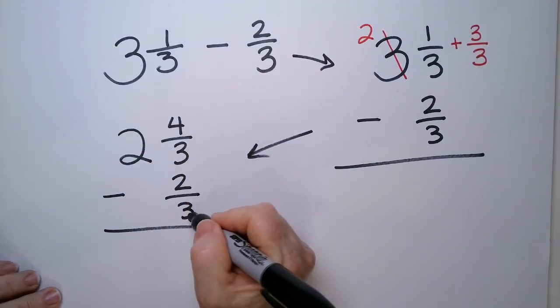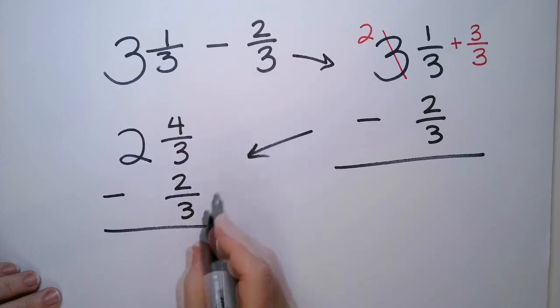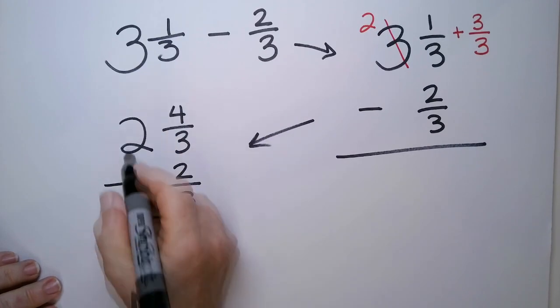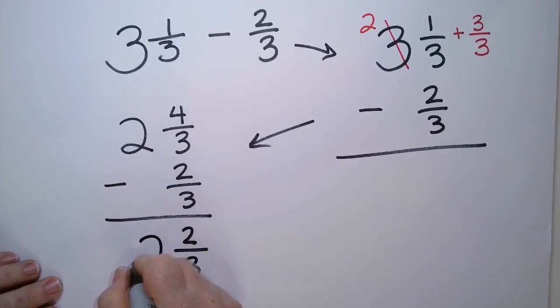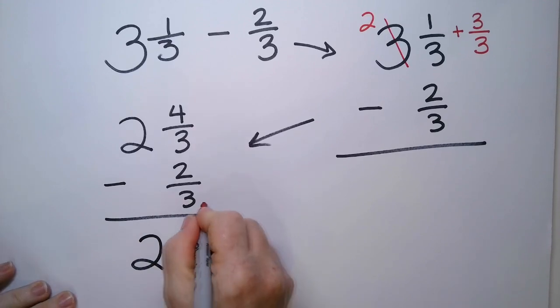So they both the denominators match. So we can just say four minus two is two. Denominator is thirds. And then we drop the two down because there's nothing here. There was a one here that I'd subtracted. And there is my solution.